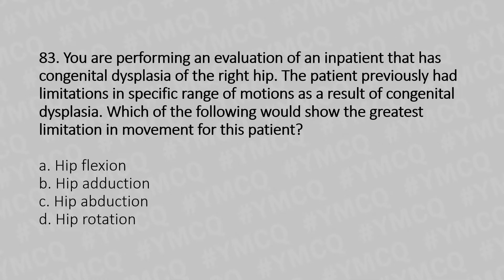Now let's move to our 83rd question. You are performing an evaluation of an inpatient who has congenital dysplasia of the right hip. The patient previously had limitation in specific range of motions as a result of the congenital dysplasia. Which of the following would show the greatest limitation in movement? Option A: hip flexion. Option B: hip adduction. Option C: hip abduction. Option D: hip rotation. The answer is Option C: hip abduction.